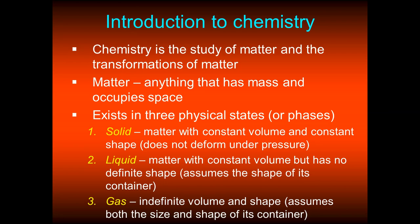A liquid is matter that has a constant volume but an indefinite shape — it will assume the shape of whatever container it's in. A gas has both an indefinite volume and an indefinite shape; it will assume both the size and shape of its container, so gases can expand or contract to fit. So chemistry is essentially how we can take a solid and make a gas, or take a gas and make a liquid.